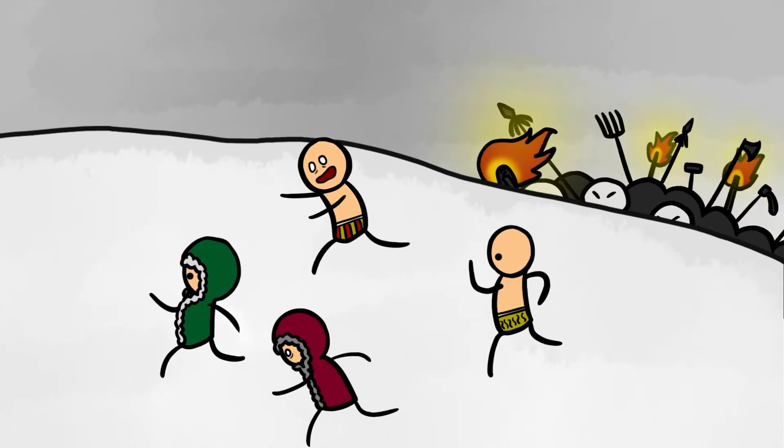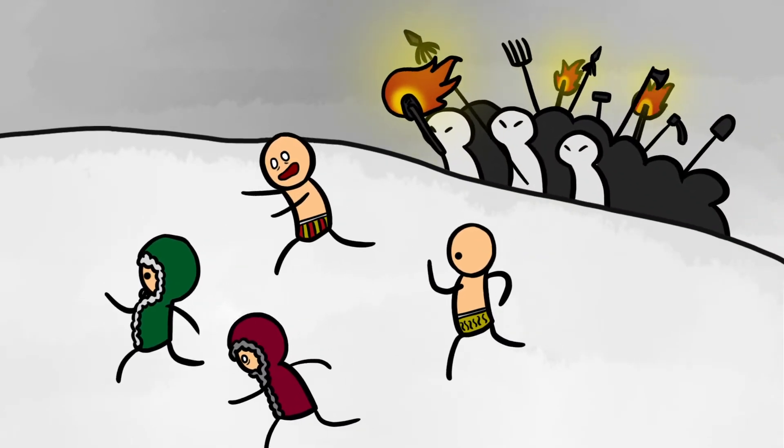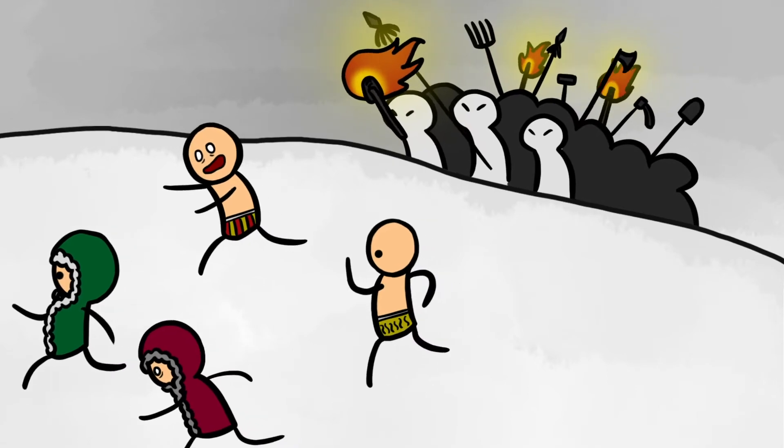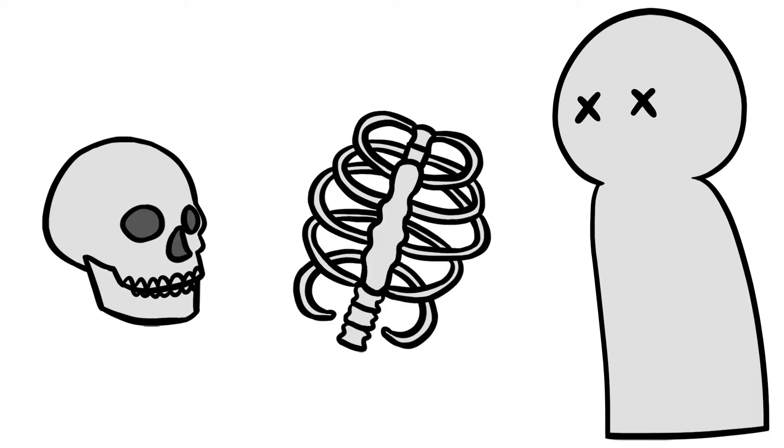There was initial speculation that the indigenous Mansi people had attacked and murdered the group for encroaching upon their lands. Three of the hikers had fatal injuries: major skull damage, chest fractures, and internal bleeding from severe chest trauma.